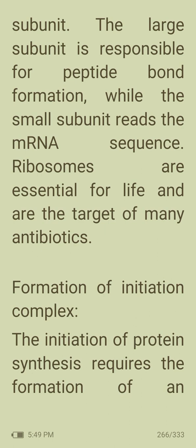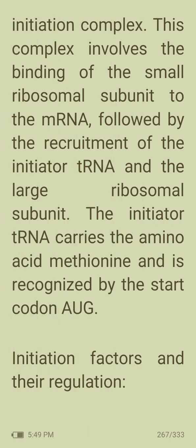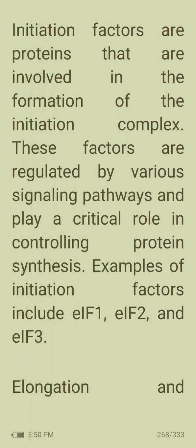The initiation of protein synthesis requires the formation of an initiation complex, involving the binding of two ribosomal subunits to the mRNA, followed by recruitment of the initiator tRNA and the large ribosomal subunit. The initiator tRNA carries the amino acid methionine and is recognized by the start codon AUG. Initiation factors such as EIF1, EIF2, and EIF3 are proteins regulated by various signaling pathways that play a critical role in controlling protein synthesis.